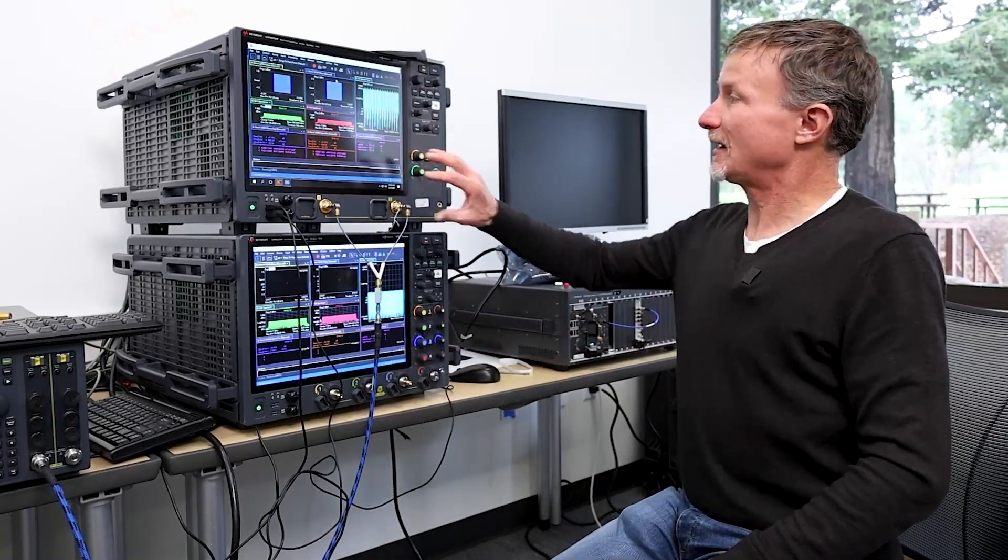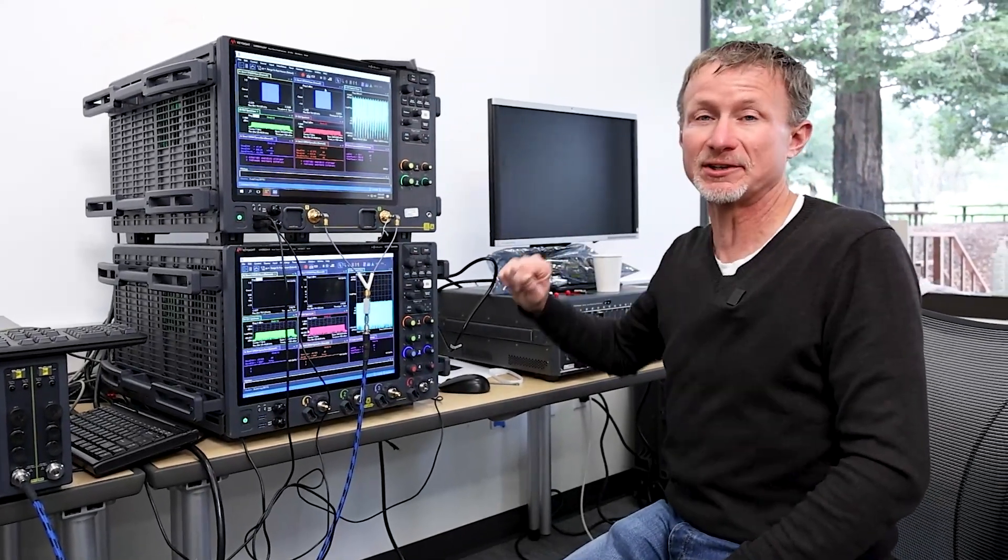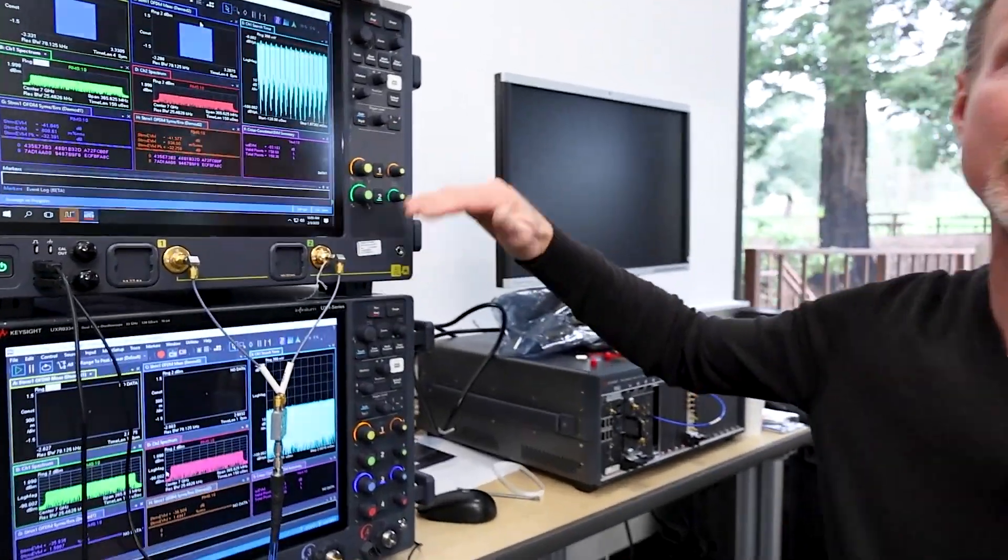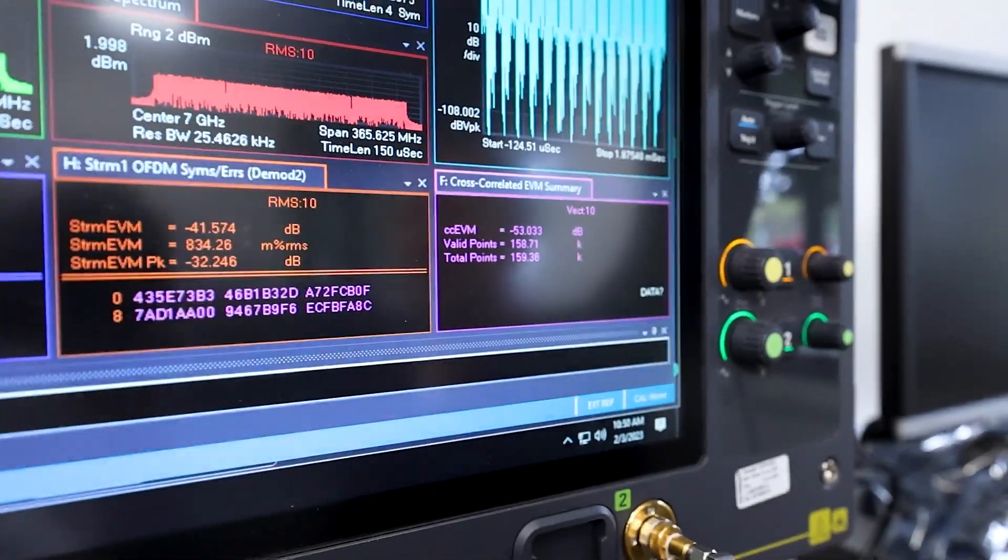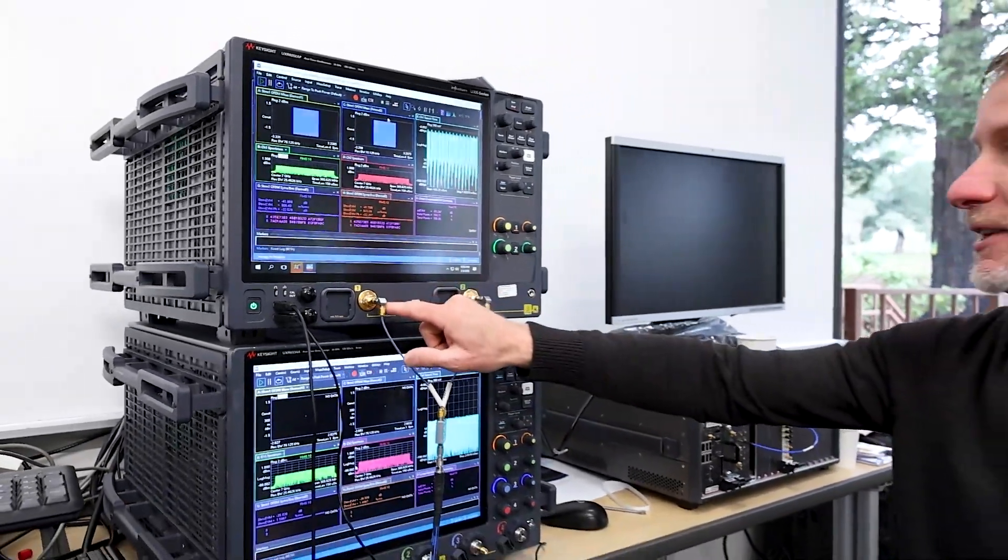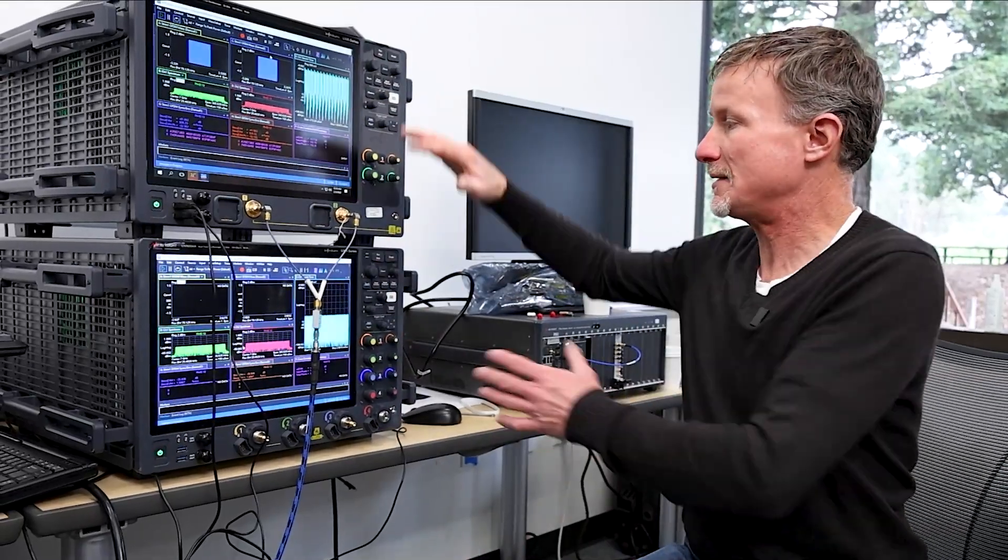Next we're going to look at the 256 gigasample per second scope and see how that looks. All right so we have the source now connected to the 256 gigasample per second UXR and the cross-correlation EVM results are actually the same as 128 gigasample per second scope. The reason for this is that we're removing all of the noise from the receiver, all the contributions from the receiver, and we would expect to get essentially the same performance with the cross-correlation EVM. The individual EVMs you would expect on the 256 gigasample per second scope to be a little bit better. Here they're again essentially the same and probably we have a little bit of a different setup with some additional adapters and connectors could be affecting that and we also might have a little bit unit to unit variation.